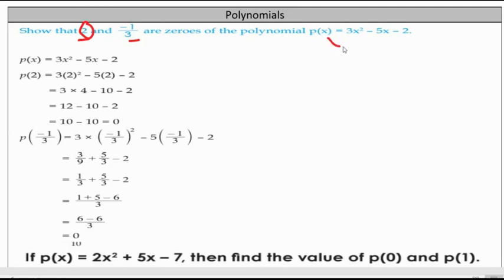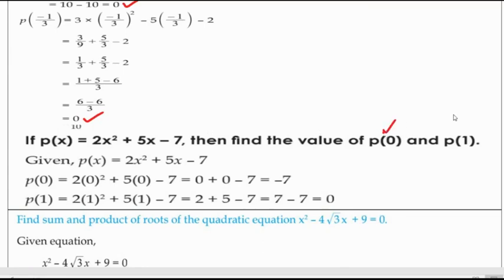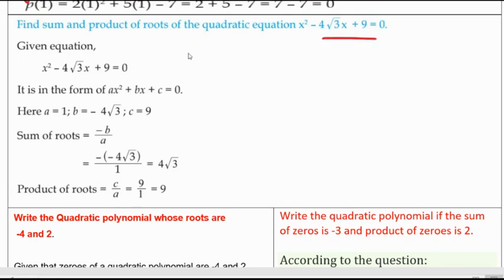Then 2 is a zero of that polynomial. Similarly minus 1 by 3 replaced gives answer zero. Find the value of p of 0 and p of 1. X place 0 gives answer p of 0. X place 1 gives p of 1 value. Find the sum and product of the given quadratic equation. There is a sum of zeros formula minus b by a. Product of roots is c by a, which is 9 by 1 equals 9.